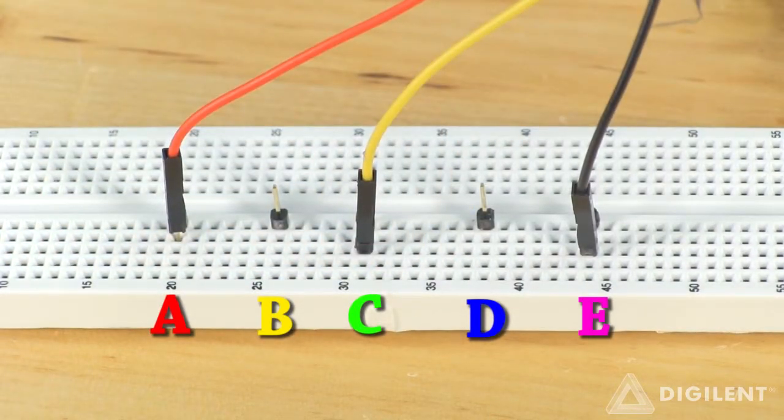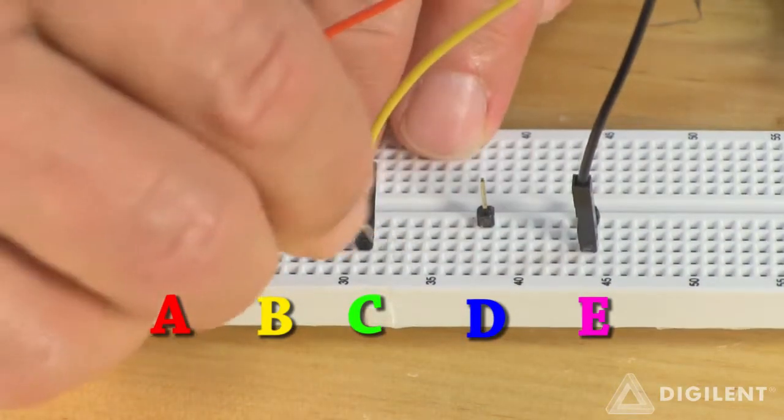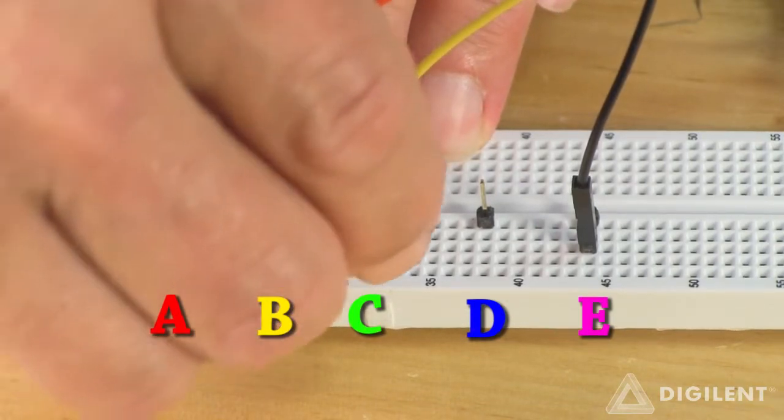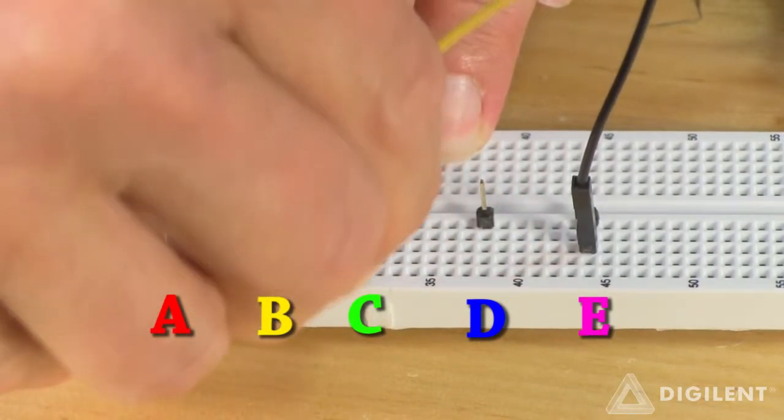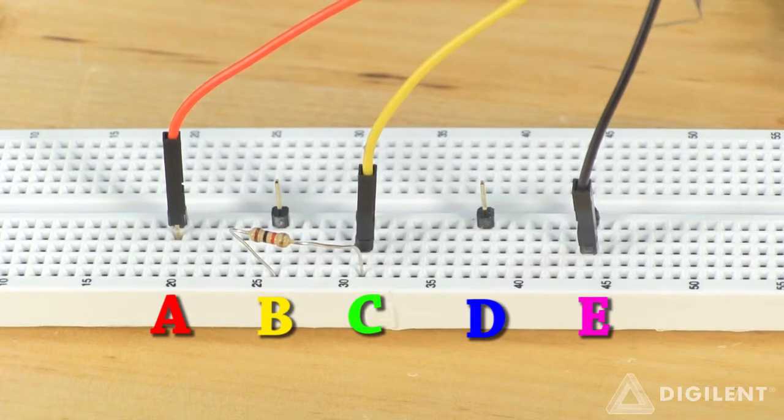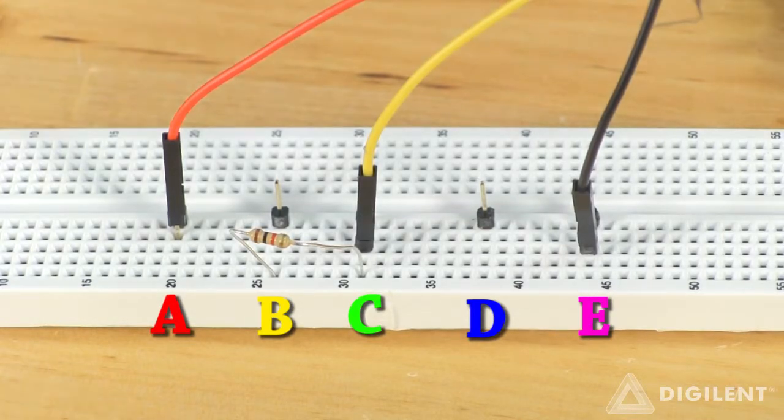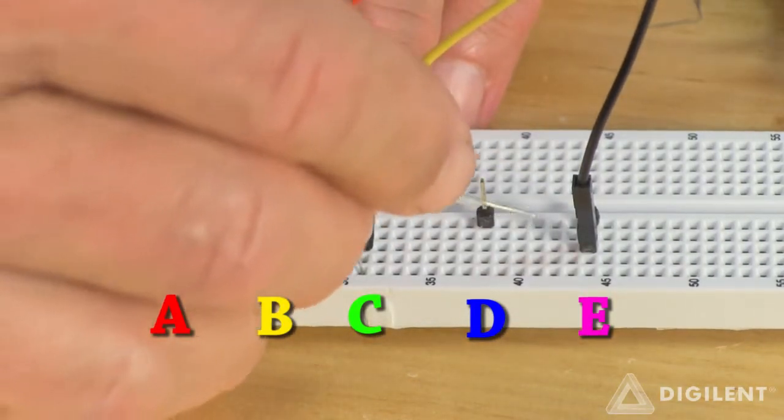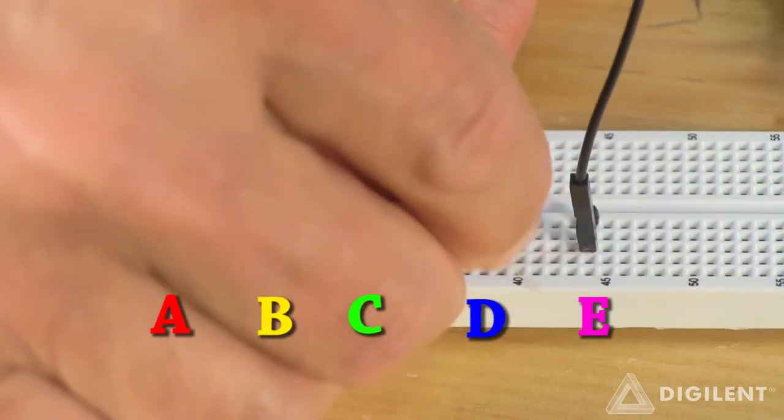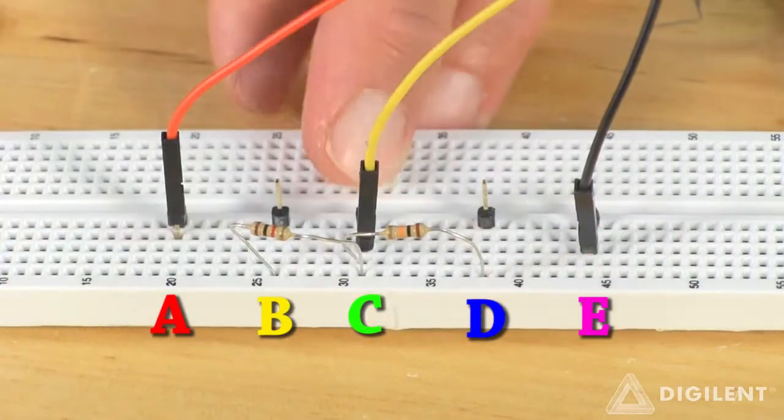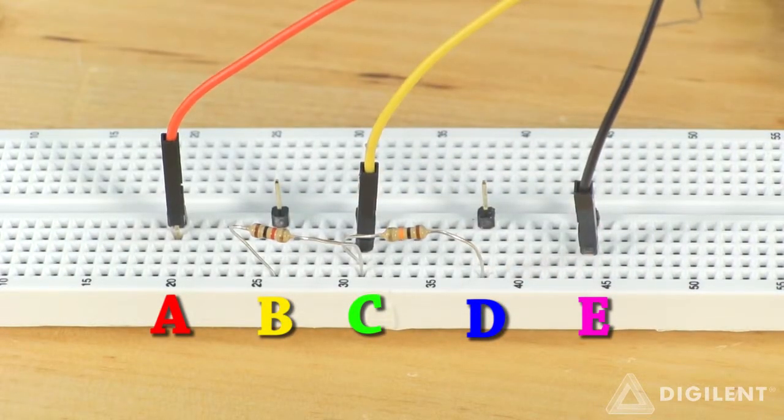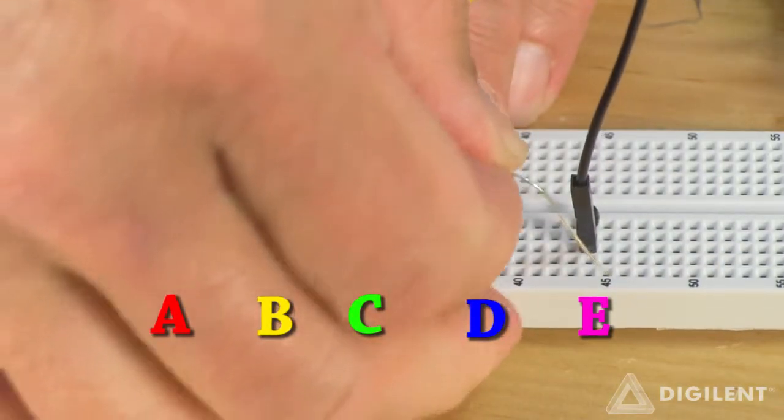Now I'll connect my resistors. A 1 kiloohm resistor goes between nodes B and C. A 10 kiloohm resistor goes between nodes C and D. And my 20 kiloohm resistor goes between nodes D and E.